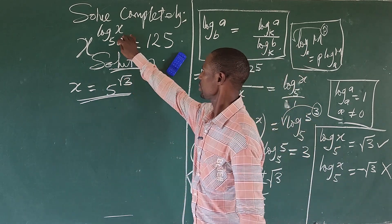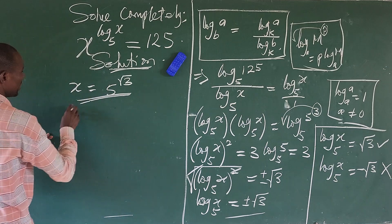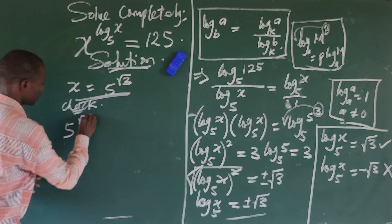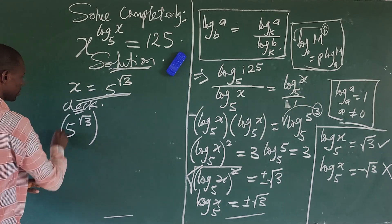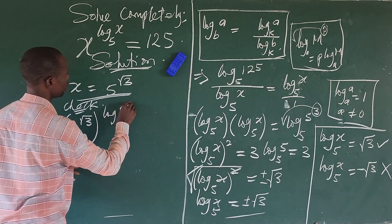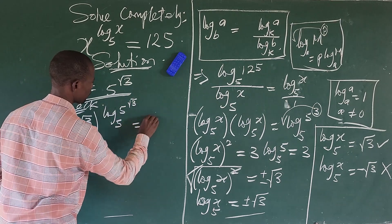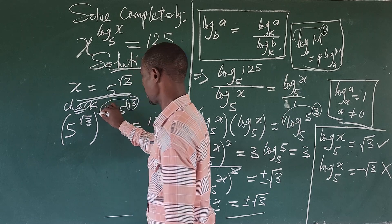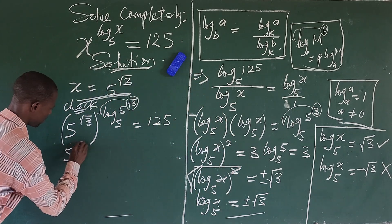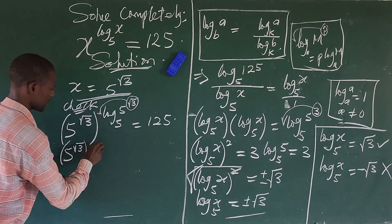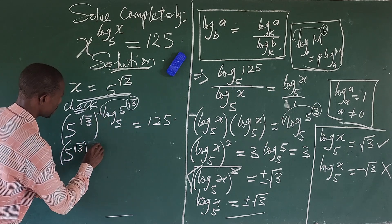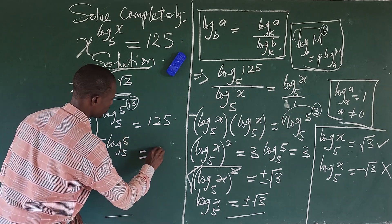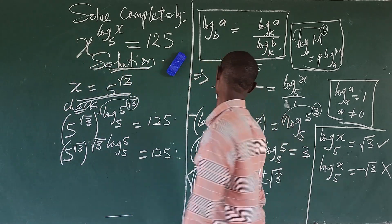Let's do a check by substituting x = 5^(√3) back into the original equation. We have (5^(√3)) to the power of log_{5^(√3)}(5) equals 125. Applying exponent laws, we can move the exponent across — this gives us 5^(√3) raised to the power of √3, times log_5(5), all equal to 125.